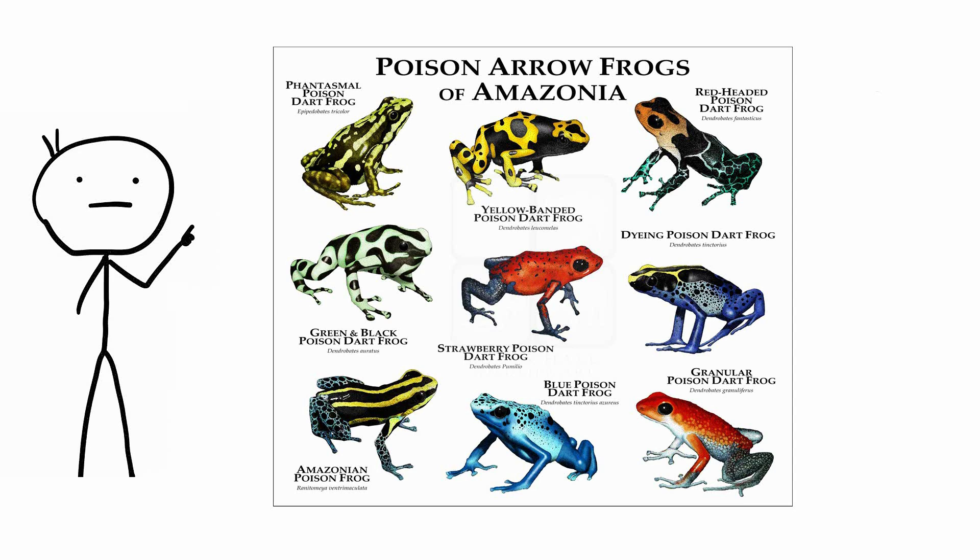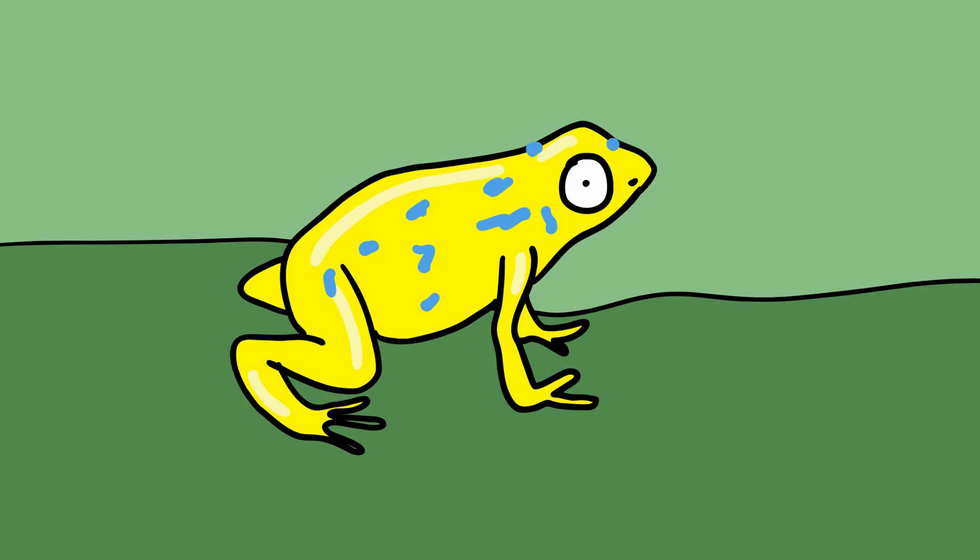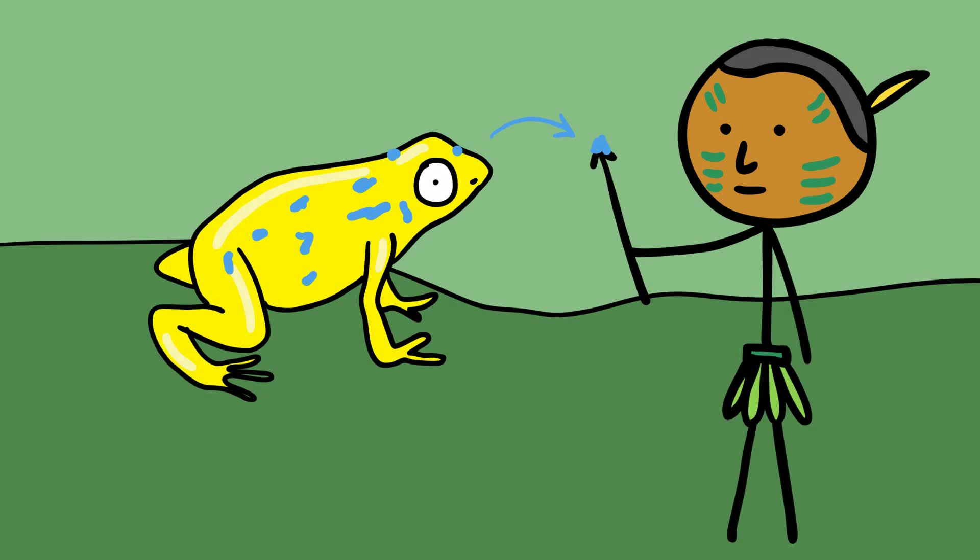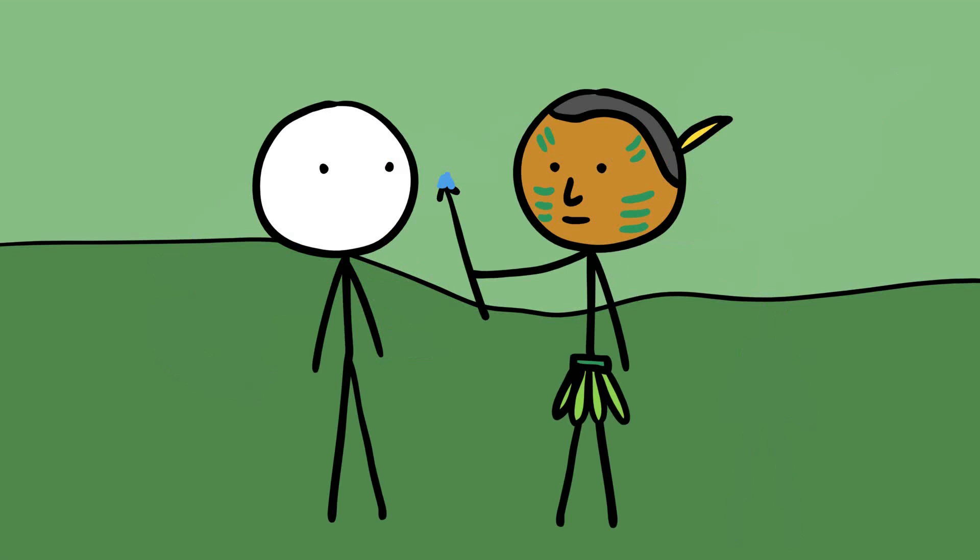Arrow poison frog. Primarily, the batrachotoxin poisons from the skin of certain frog species has been used to coat the tips of hunting darts by certain Amazonian Indians. Given human nature, I imagine a few of these darts have ended up finding a human target with lethal effect.